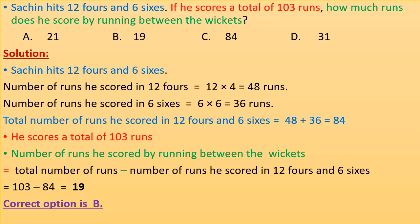He scores a total of 103 runs. So, number of runs he scored by running between the wickets = total runs minus runs scored in fours and sixes = 103 − 84 = 19. Correct option is B.